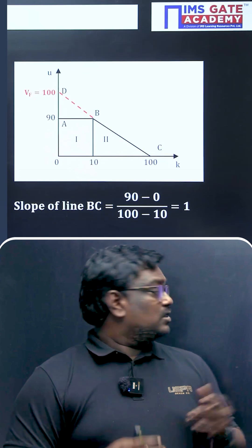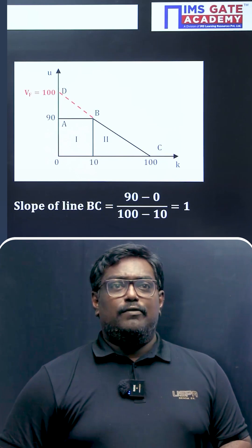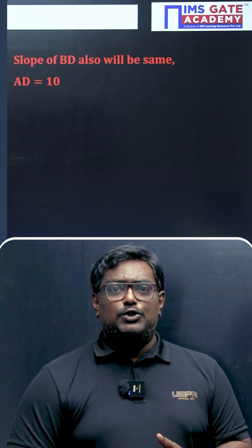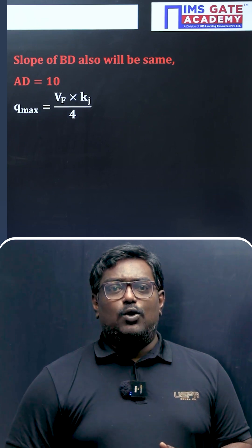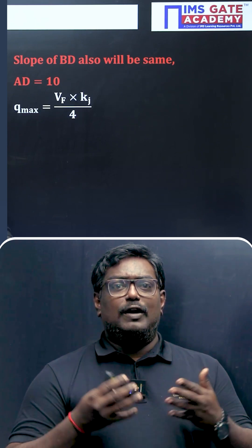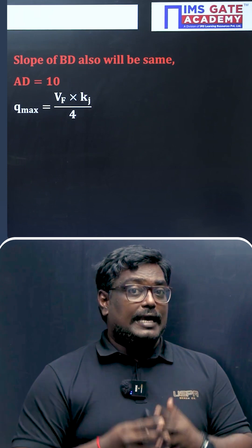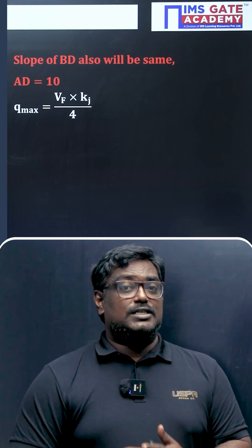By using that, the slope of line BD will also be the same. So when I calculate slope of line BD, on substituting this we'll get AD equals 10. What is vf? It is nothing but the free flow velocity. What is kj? kj is nothing but jam density.